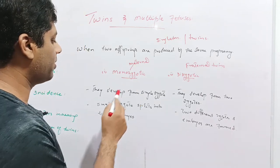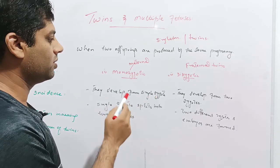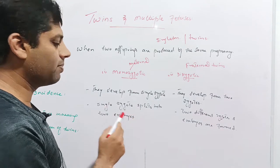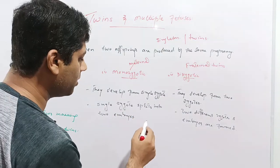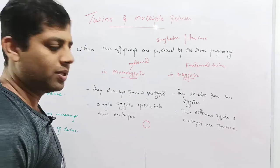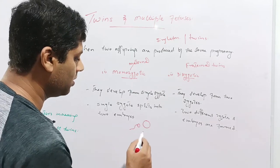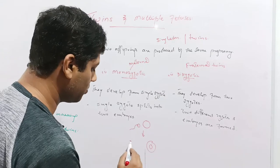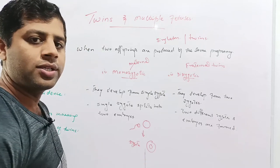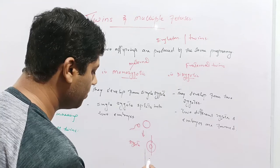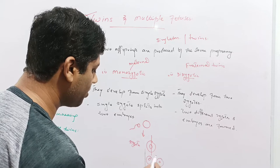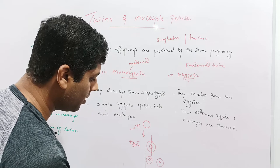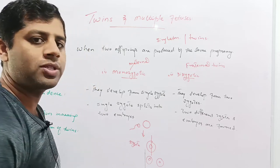Monozygotic twins develop from a single zygote — therefore these are called monozygotic. A single zygote splits into two embryos. For example, a single ovum released from the ovary of the female is fertilized by a single sperm. These two haploid cells unite to form the diploid cell called the zygote. The zygote undergoes mitosis and splits into two zygotes which are separated, and each zygote divides and redivides to form an embryo and then a fetus.